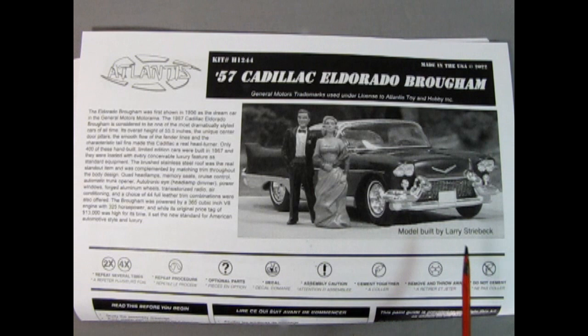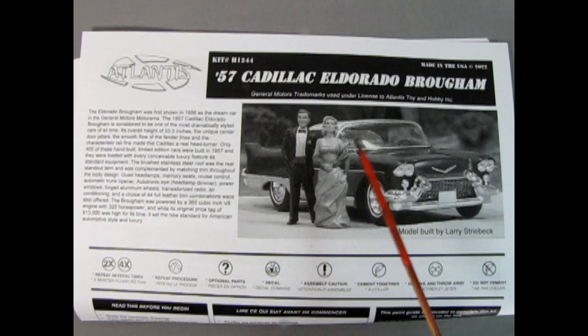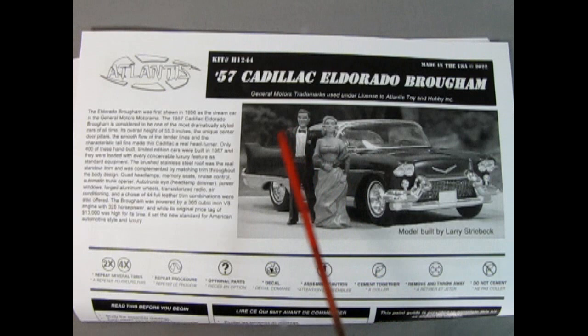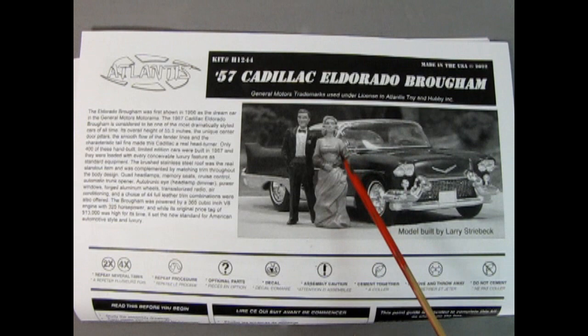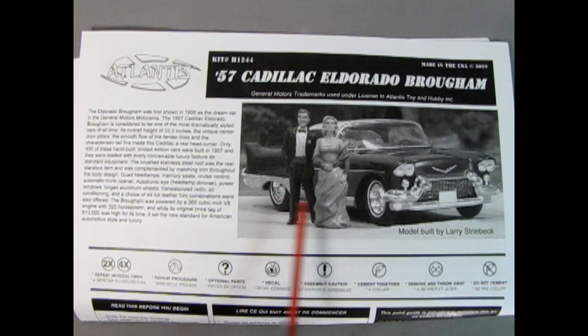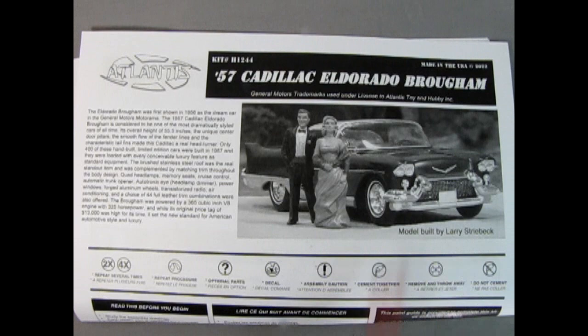Here we have our instruction sheet, and I always like to start with this just so that we know how the model goes together before we actually look at the parts. Now, these are the figures they were mentioning on the side of the box, and these figures actually remind me of old photographs of my mom and dad because they got married back in the 50s. They were young adults, and I'm pretty sure my mom had a dress quite like this. And of course, men always wore suits and ties back in the day. This wonderful photograph showing both the model and the figures was built by Larry Streeback.